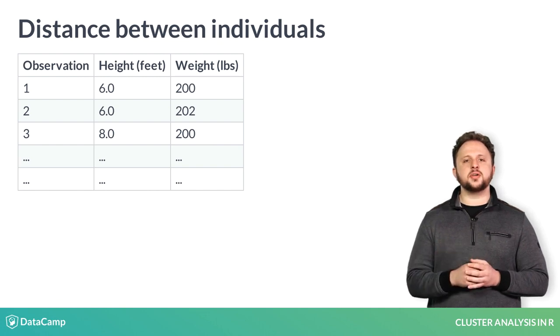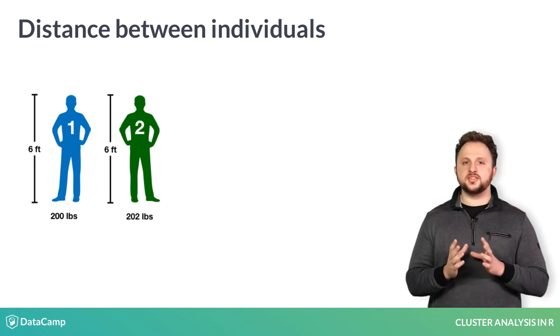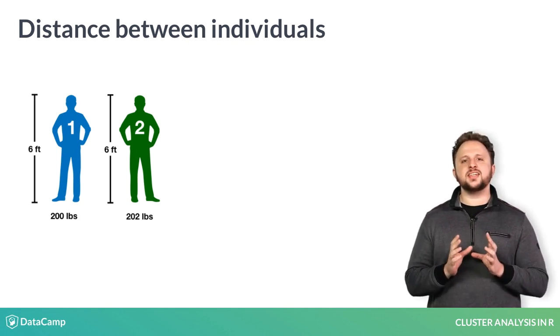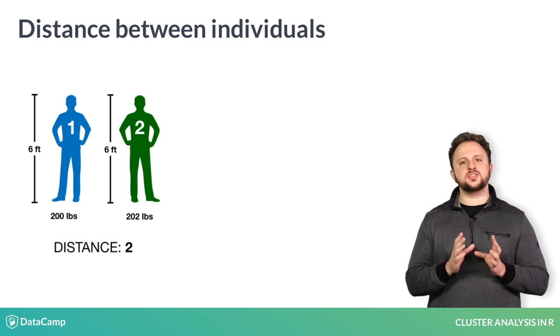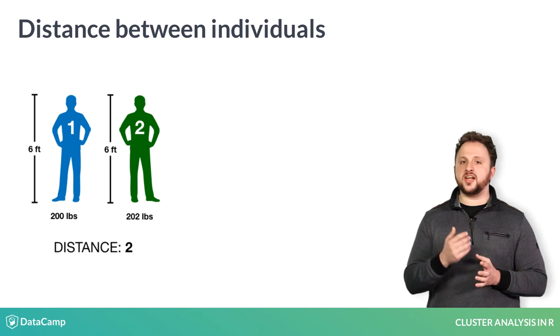Let us start by comparing observations one and two. Here, both men are the same height, six feet, but they differ slightly in weight. In this case, the difference is two pounds. If we calculated the Euclidean distance between them, we would get a value of two.